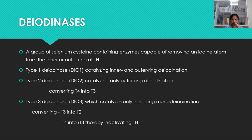Coming to metabolism, the metabolism of hormones will be done by a group of enzymes called deiodinases — a group of selenocysteine-containing enzymes that remove iodine atoms from the inner and outer ring of thyroid hormone. Type 1 deiodinase catalyzes both inner and outer ring deiodination. Type 2 deiodinase catalyzes only outer ring deiodination, converting T4 to T3 which is the active form. Type 3 deiodinase catalyzes only inner ring deiodination, converting T3 into T2 or T4 into reverse T3. Overall, deiodinase 3 inactivates the hormone, while deiodinase 2 increases the availability of the active hormone.